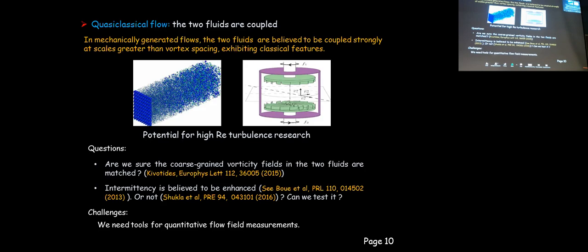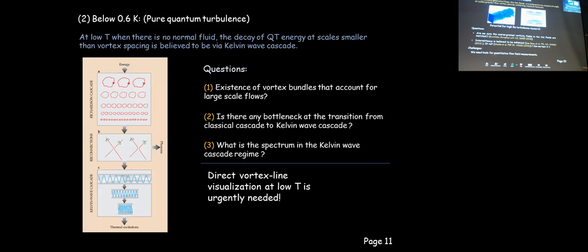There are still questions — recent simulations suggest that the vorticity fields may not be very well matched between the two fluids. Furthermore, at very small scales below the mean inter-vortex spacing, the two fluids cannot be coupled, leading to additional dissipation due to mutual friction. Some theoretical studies suggest that due to this small-scale dissipation, intermittency could be quite different from that in classical fluids. The question is: can we develop measurement tools to study this?